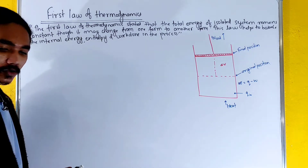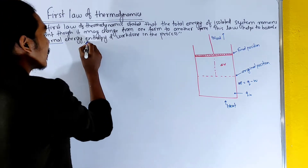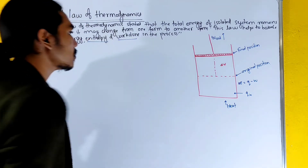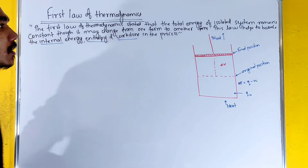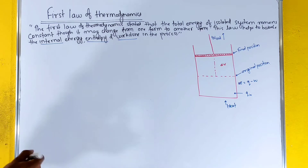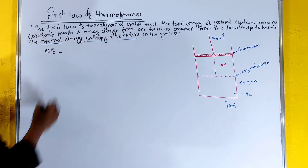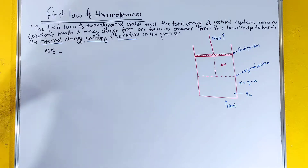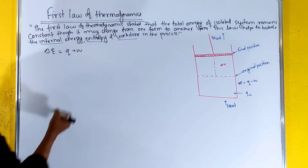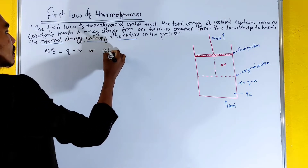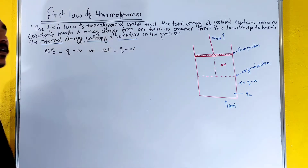The internal energy change is represented as delta E. The first law of thermodynamics gives us delta E equals q plus w, or delta E equals q minus w, depending upon the conditions.